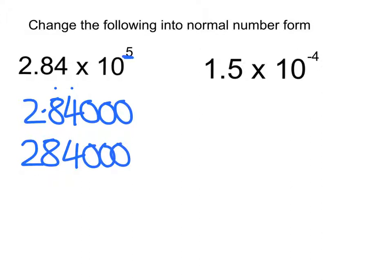Now, the second one is a small number, as I have a negative power. This time, again, I write out the number on its own, the 1.5.